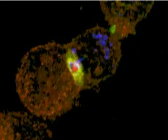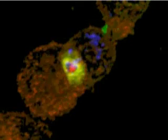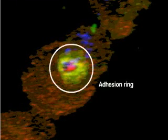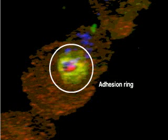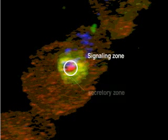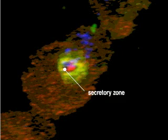If we look closely at the synapse, we can see its structure. The outer ring contains the adhesion molecule, and the inner ring is divided into two parts: one containing the signaling molecules, and the other, dark in this image, is the secretory zone.